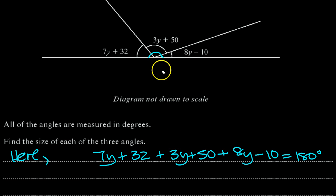So we've got 7y, 3y, and another 8y. So 7, 10, 18y. Then add up the numbers: 50 minus 10 is 40, plus 32 is 72.